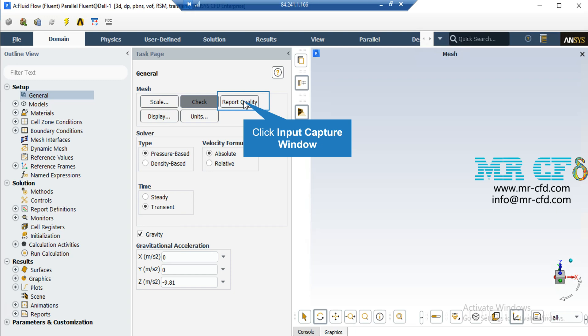For example, you can see the maximum aspect ratio of your mesh, maximum orthogonal quality, etc.